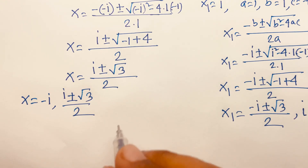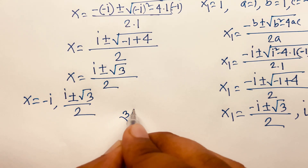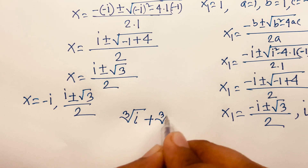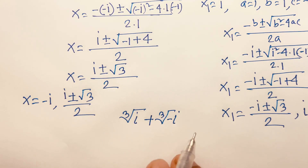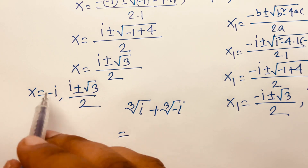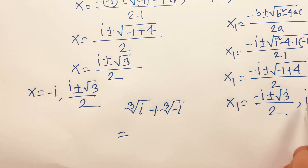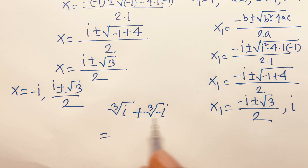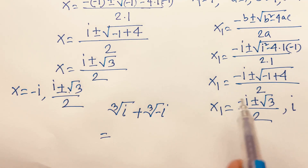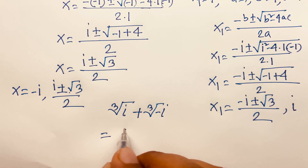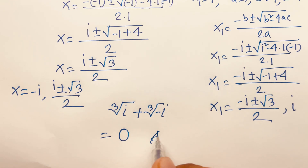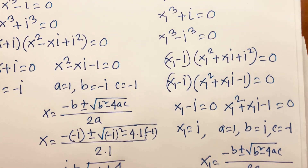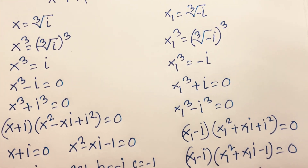Our final answer: cube root of i plus cube root of minus i equals what? Looking at the values, minus i and plus i cancel to give zero, and the other pair also cancels to zero. So our answer is zero. Thank you all — if you enjoyed this video, please subscribe to my channel and like this video. Goodbye.